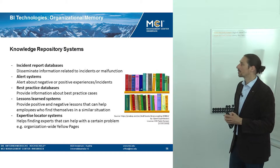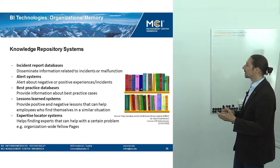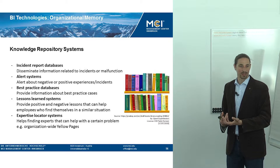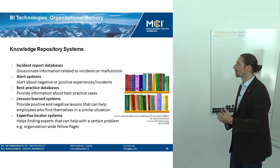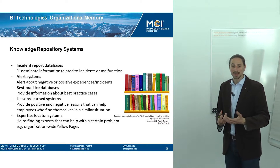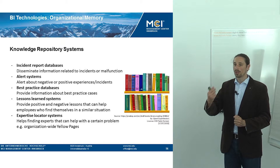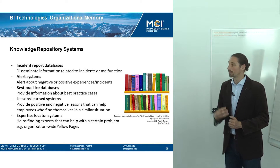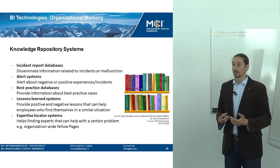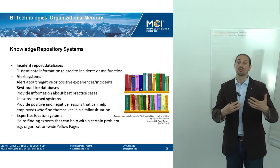There are different types of knowledge repositories. The document management system is probably the most well known. We have incident report databases that basically disseminate information related to incidents or malfunctions — like a database of log files. We also have alert systems that alert you about some negative or positive experience or incident; a news ticker on your phone that gives you news about a certain domain you signed up for would be an alert system. Best practice databases are very common in organizations — especially in customer support, where there are best practice databases for how to solve certain problems.